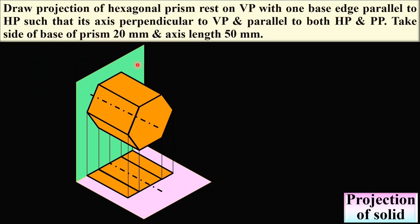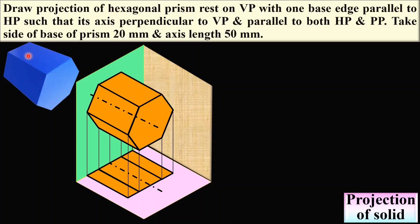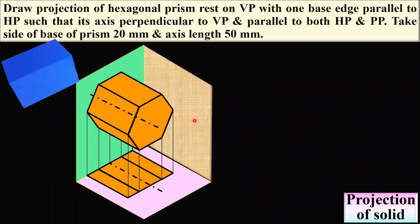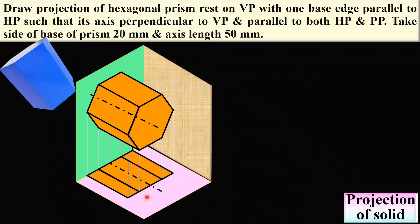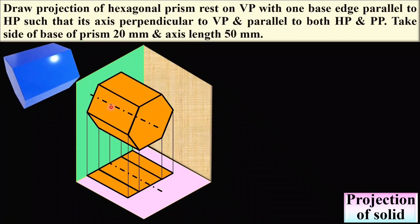Take the side of the base prism as 20 mm and axis length as 50 mm. You have to imagine this figure in your mind — it is not required to draw it in the examination. Here you can see the true shape of the base can be seen in the front view, so you should start from the front view for the first stage. This is the hexagonal prism and this is the profile plane. The axis is parallel to the profile plane as well as parallel to HP, but it is perpendicular to VP.